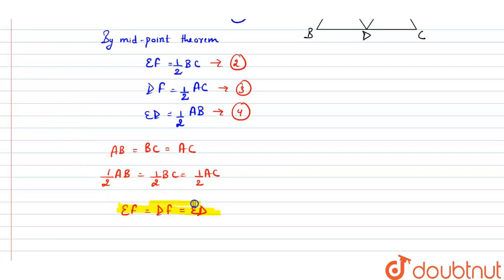Now we proved all the three sides of the triangle DEF are equal. Hence, we can write DEF is an equilateral triangle. So this only we have to prove. Thank you.